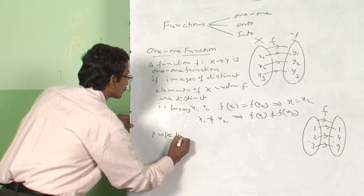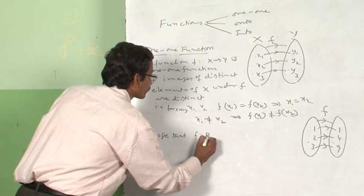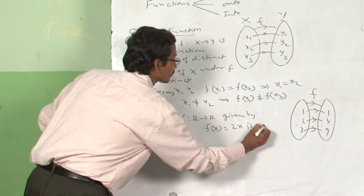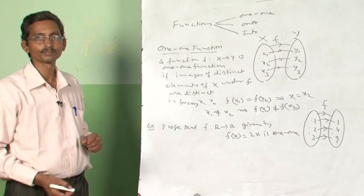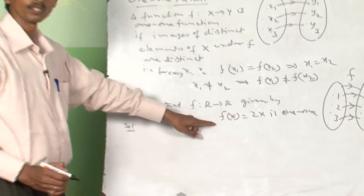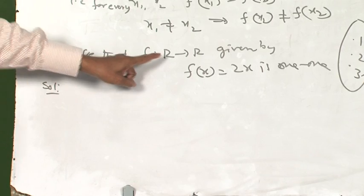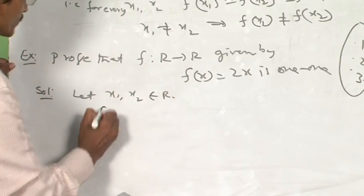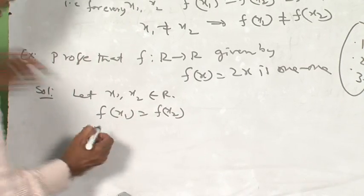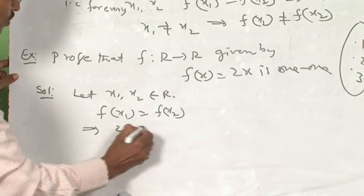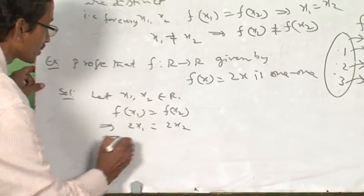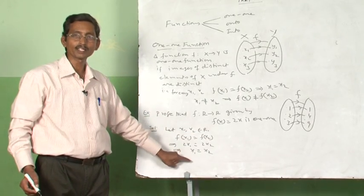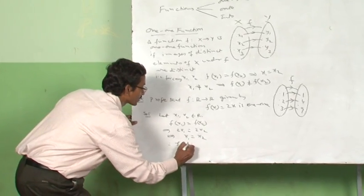Example: Prove that f mapping from R to R given by f(x) = 2x is one-one. Solution: To prove the function is one-one, let X1, X2 belong to R. Suppose f(X1) = f(X2), which means 2X1 = 2X2. This implies X1 = X2 by cancelling 2 on both sides. Therefore, the function f is a one-one function.